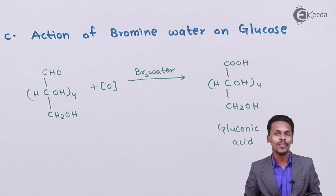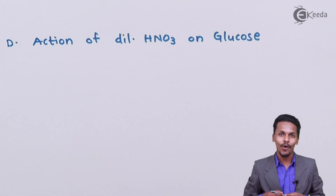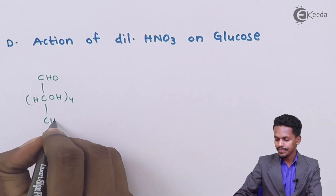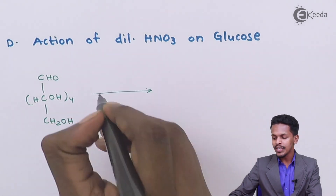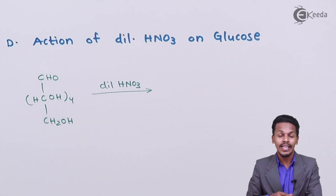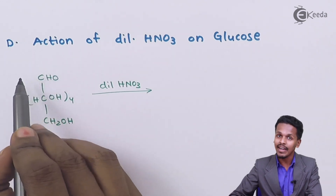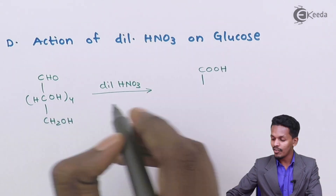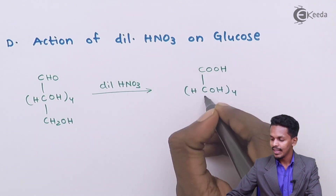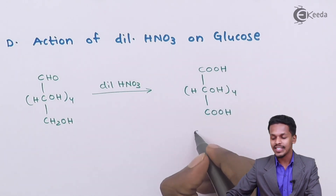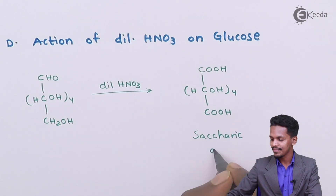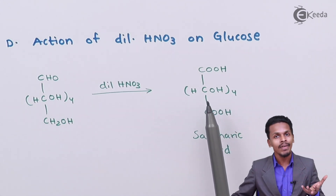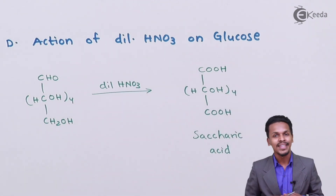The next reaction is the action of dilute HNO3 on glucose. HNO3, being a good oxidizing agent, oxidizes not only the aldehyde carbon but also the CH2OH carbon at the bottom. The product we get is COOH at the top, CHOH four times in the middle, and COOH at the bottom. The name of this product is saccharic acid. This acid can also be obtained from gluconic acid treated with dilute HNO3.